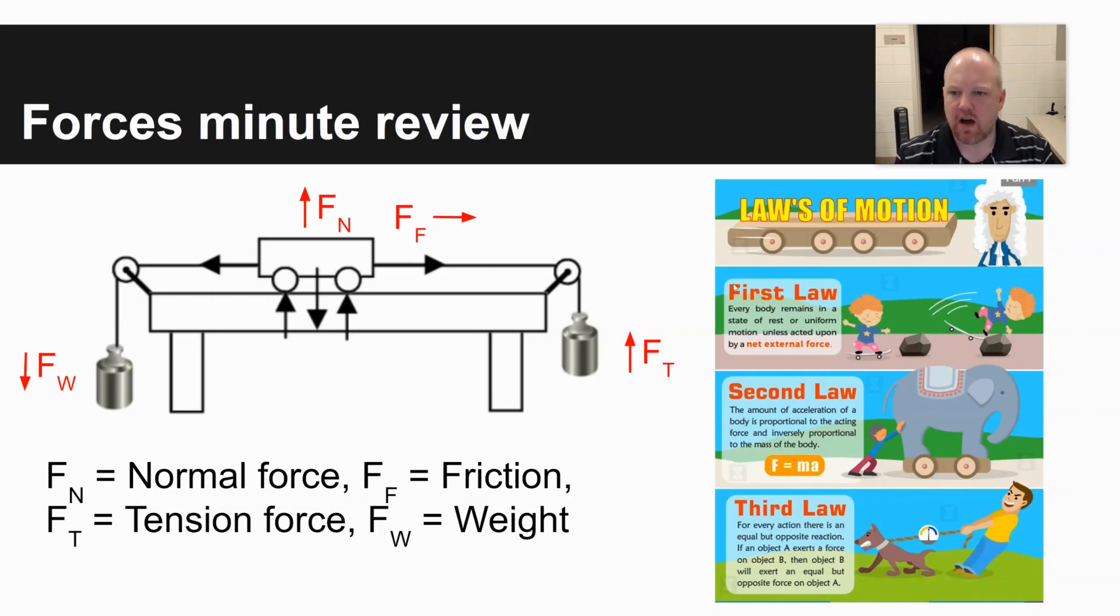On the right hand side there are different laws of motion, Newton's laws of motion. The first law, sometimes called the law of inertia, says that an object in motion is going to stay in motion or at rest unless acted on by an outside force. Newton's second law basically says force is equal to mass times acceleration.